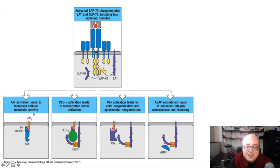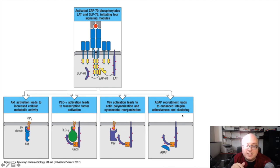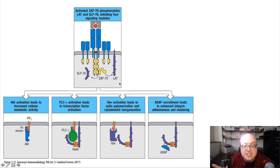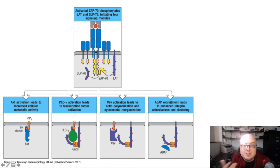These four signaling modules—increased metabolic activity, transcription factor activation, cytoskeletal reorganization, and integrin activity—together facilitate all the different effector functions that T-cells perform, whether they're cytotoxic T-cells or T-helper cells. All four are necessary for T-cells to mount their effector functions in response to antigen recognition.